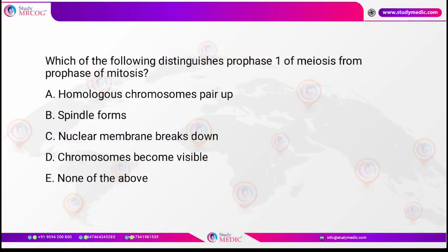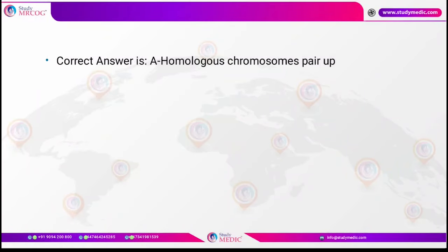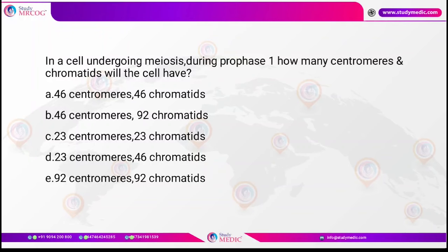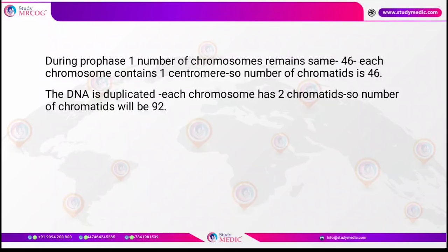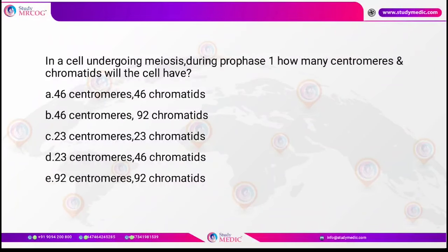Question: Which of the following distinguishes prophase 1 of meiosis from prophase of mitosis? In meiosis, there is pairing up of homologous chromosomes and crossing over, which is responsible for genetic variability in humans. This is the phase that differentiates meiosis 1 from mitosis. Further: in a cell undergoing meiosis during prophase 1, how many centromeres and chromatids will the cell have? The number of centromeres remains 46, but since DNA is duplicated, each chromosome has two chromatids, so the number of chromatids is 92. The answer is 46 centromeres and 92 chromatids.